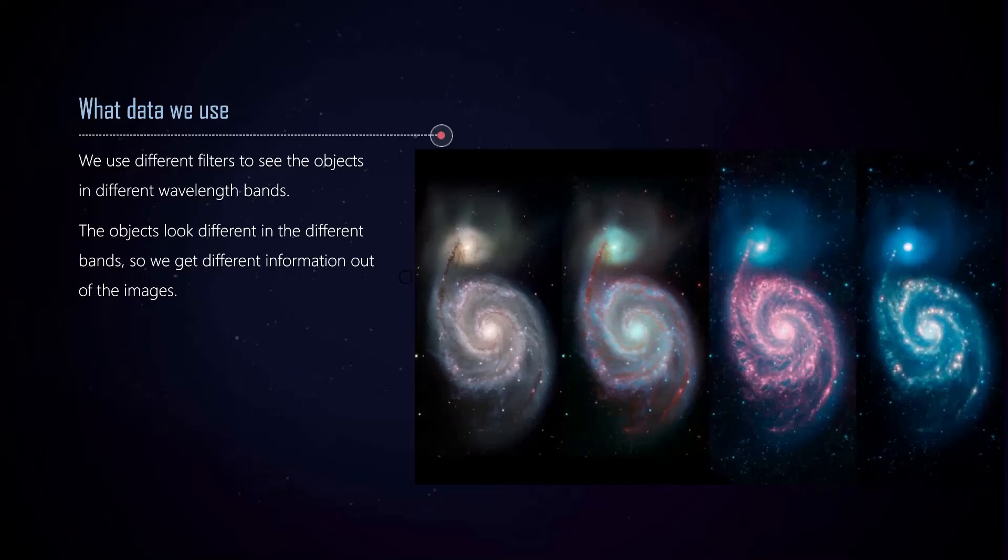These different images in different bands convey different information. The image in infrared tells us where the dust inside that galaxy is. The image in ultraviolet tells us where a lot of new stars are forming. We can get a lot of information out of these images just if we take them in different bands. That's how we try to study them and separate them out.